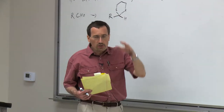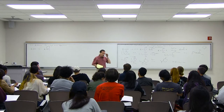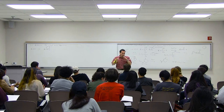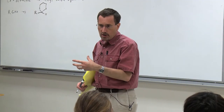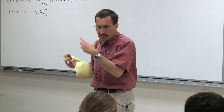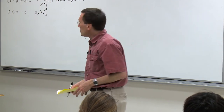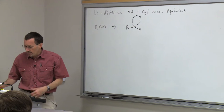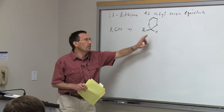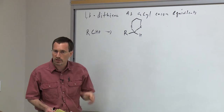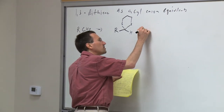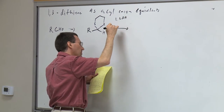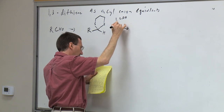Sulfur is special. As you move down the periodic table, elements get bigger and more polarizable, meaning they're better at stabilizing negative charge nearby. Once you put the sulfurs in, this proton—instead of being like an alkane—is reasonably acidic. It can be removed with LDA; it's more acidic than diisopropylamine, which has a pKa of about 36.